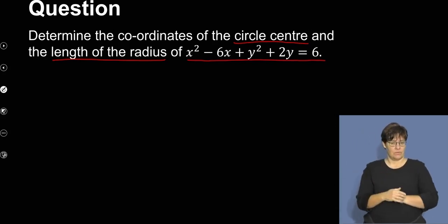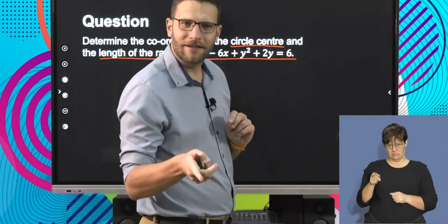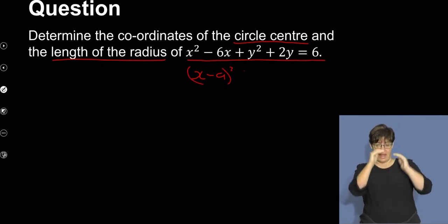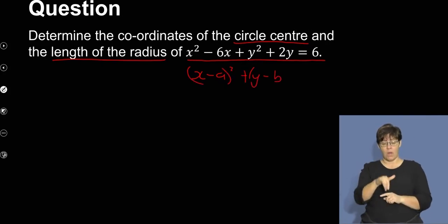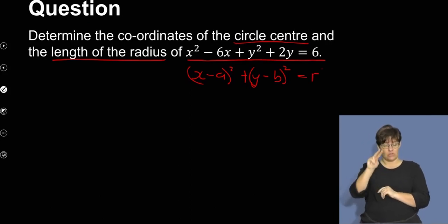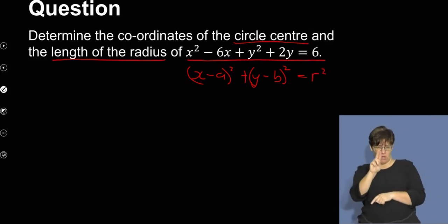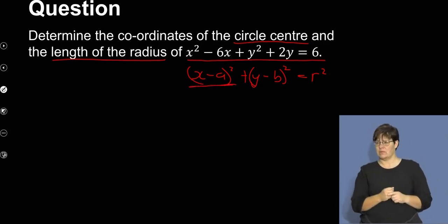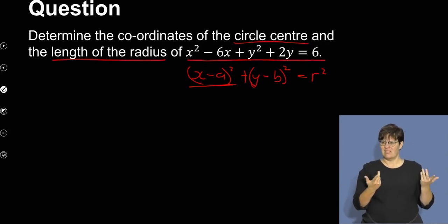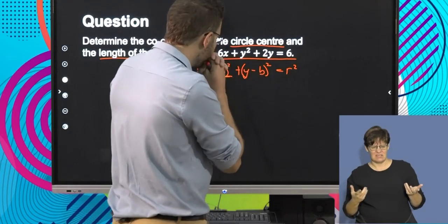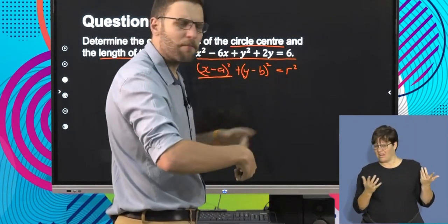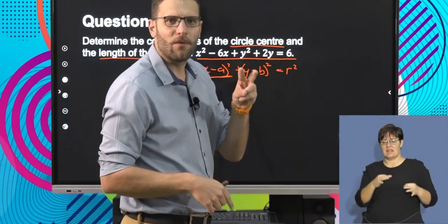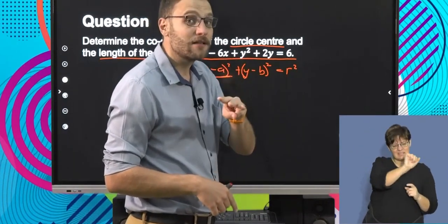This doesn't look like what it's supposed to look like. It's supposed to look like (x minus a) squared plus (y minus b) squared equals r squared — it's supposed to have a square. But it's just got x squared minus 6x; it's not together in one square. So how do I get it back into this format? Because once it's in that format, I can decide the x and y coordinates of the center and the radius.